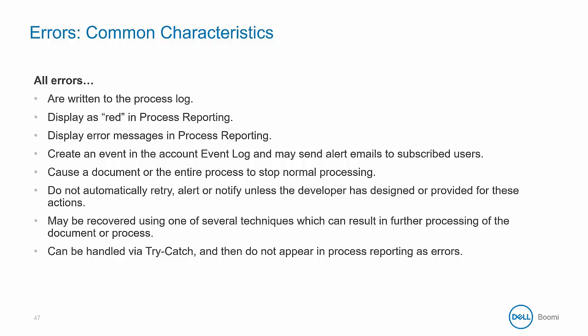Errors cause a document or the entire process to stop normal processing. Unless you have designed it, there is no automatic retry, alert, or notification. There are techniques to recover from these errors, but these must be designed and developed into your process. Errors can be handled with a try-catch shape, but those errors do not appear in process logs as errors. This is a significant point — when debugging, if you have a try-catch shape, it can actually mask the error and make it difficult to find. So while they are certainly useful, that's an important point to keep in mind when debugging.